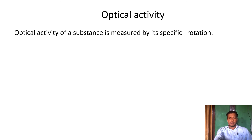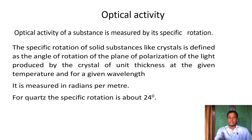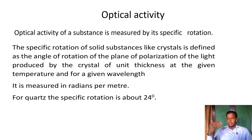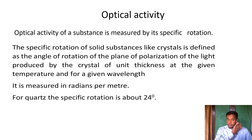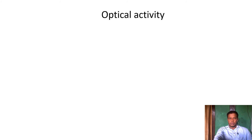Optical activity is measured by a quantity called specific rotation. Specific rotation is defined as the angle of rotation of the plane of polarization produced by a crystal of unit thickness at a given temperature and for a given wavelength. Specific rotation is measured in radians per meter or degrees. For quartz, the specific rotation is 24 degrees.